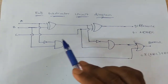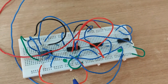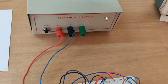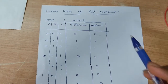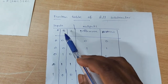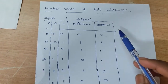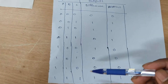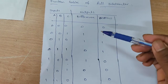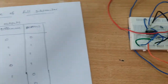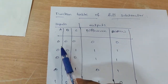This complete circuit diagram is connected on the breadboard. Now switch on the fixed power supply. This is the function table of the full subtractor — these are the inputs A, B, C and these are the outputs: difference and borrow. By varying the inputs from 0 to 7 we can observe the outputs using LEDs.